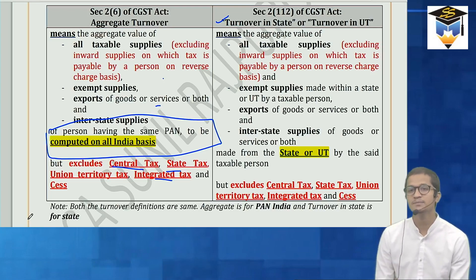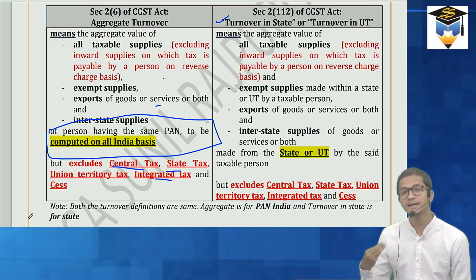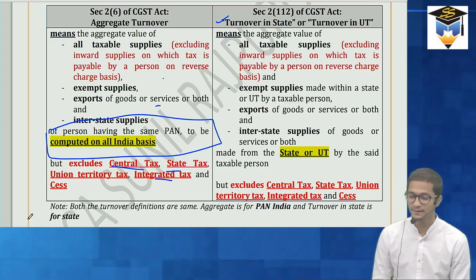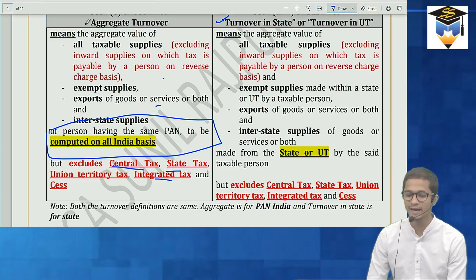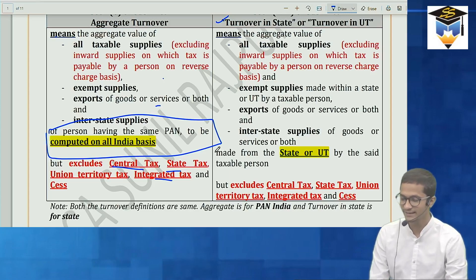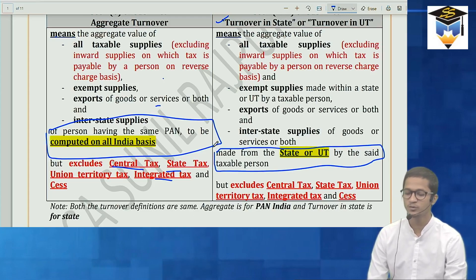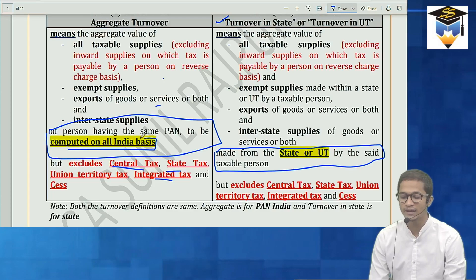Some things still attract old taxes — like alcoholic liquor on which state excise duty and VAT still apply. So those will be included in aggregate turnover. This is the main distinguishing point between the two definitions. Aggregate turnover is computed on all India basis — meaning all registrations under the same PAN across Maharashtra, Gujarat, etc. are combined to get aggregate turnover.